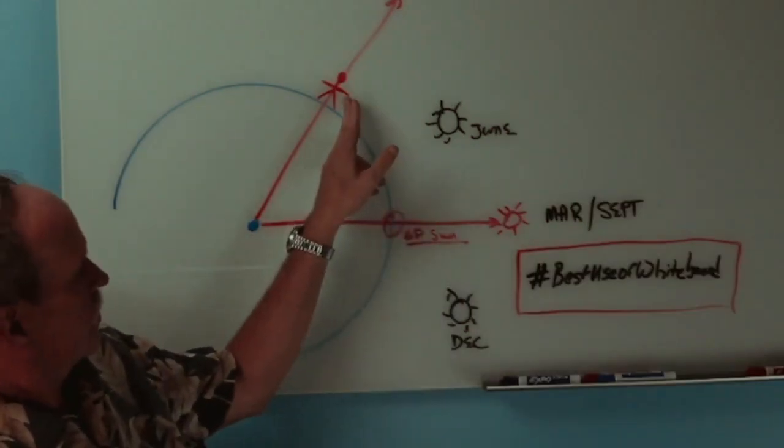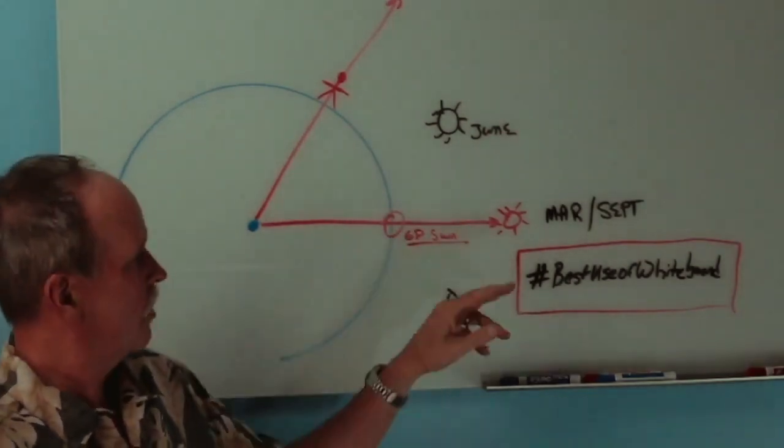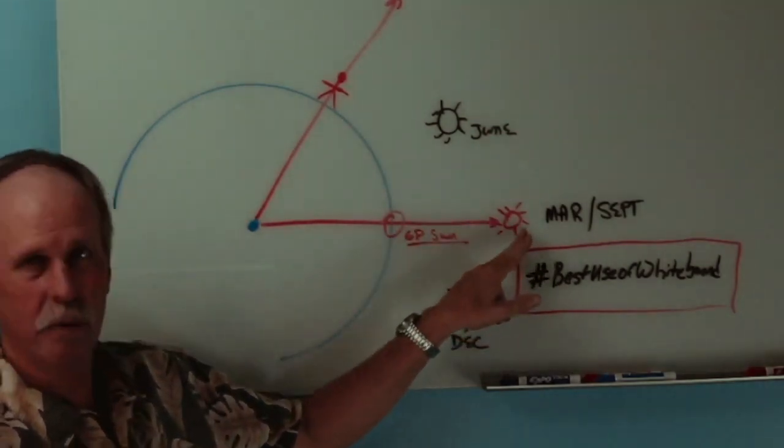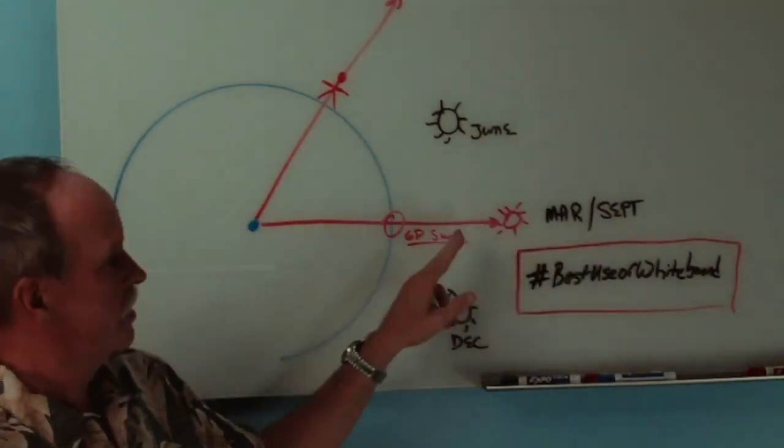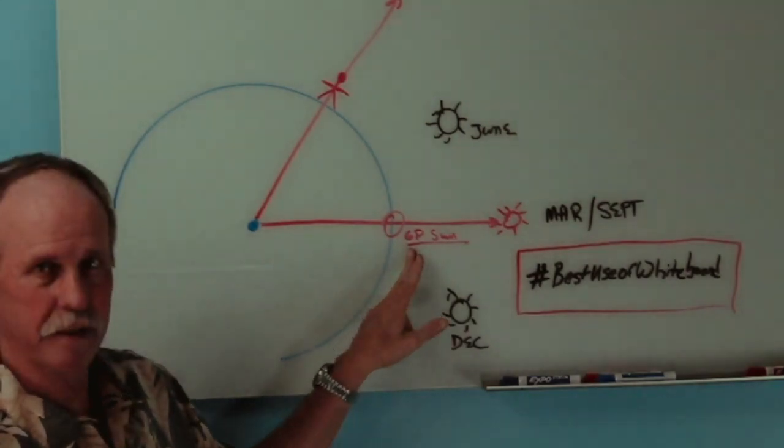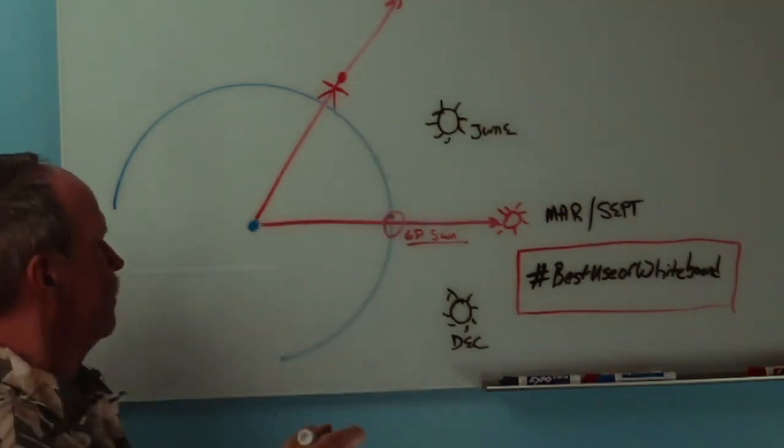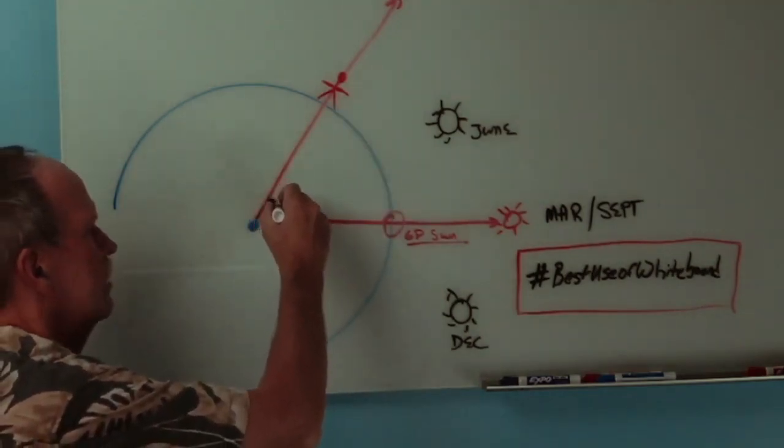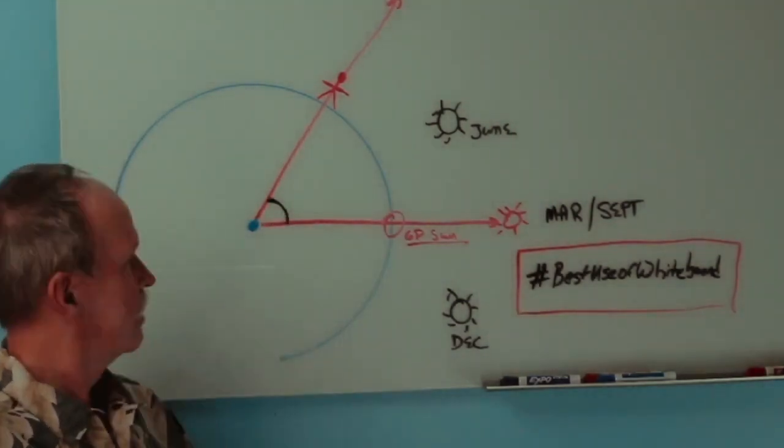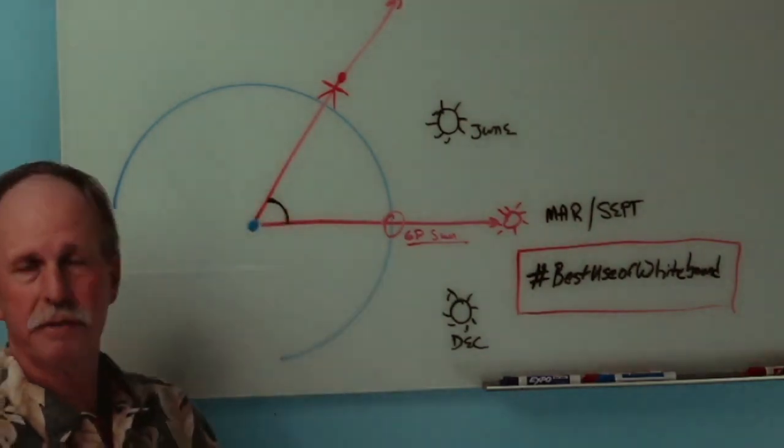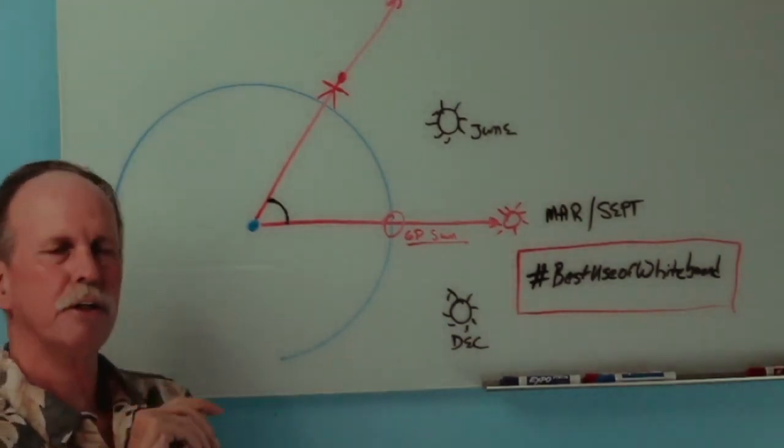Now here we are on the surface of the Earth, and we'll make this the equator. Now for simplicity's sake, I'm going to put the Sun out at the equinox, which we see in March and September, and it is directly over the equator, so the geographic position of the Sun will be on the equator. So what's our latitude up here? Well the way to find that latitude is to look at that angle right there. That angle will tell us what our latitude is. So if that angle is 45 degrees, we're 45 degrees north.